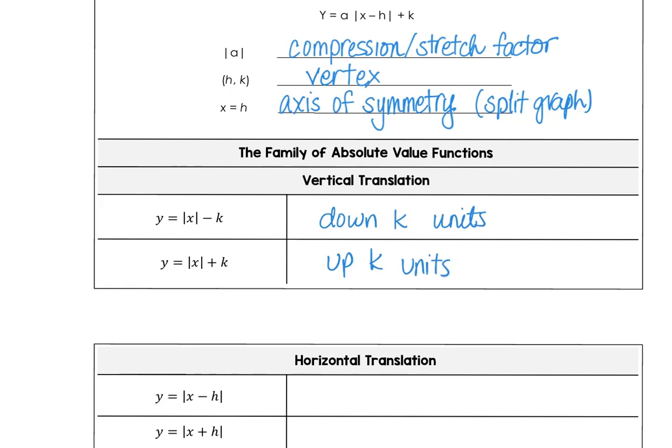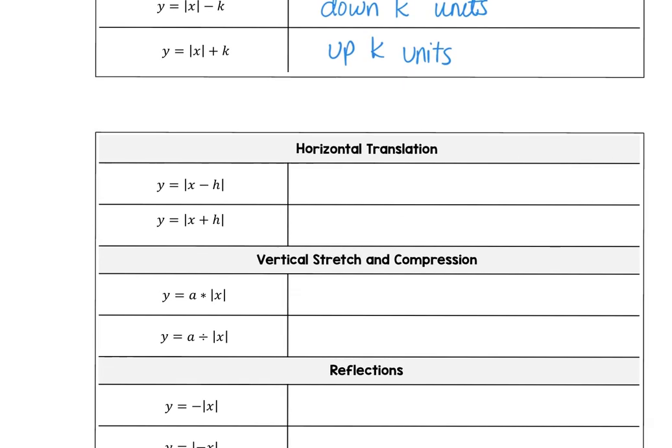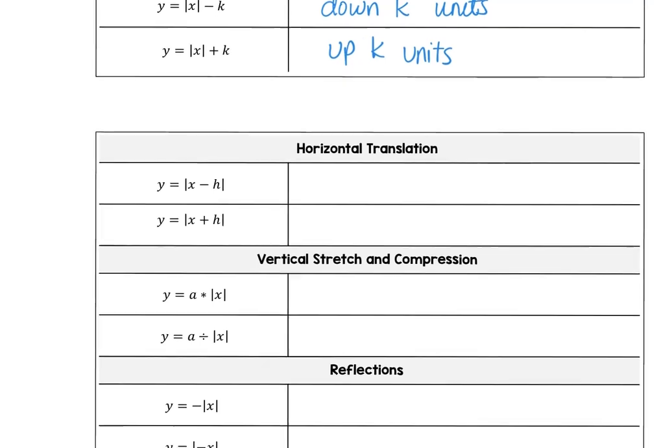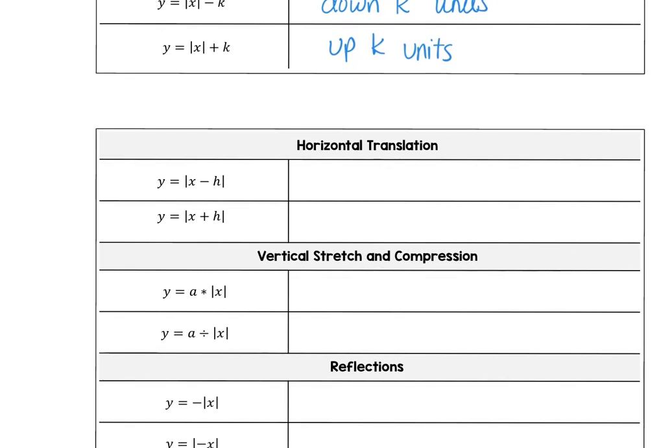For horizontal translations, when you subtract h, that moves your vertex point, your x coordinate, right h units. If you add h, that moves the x coordinate left h units.